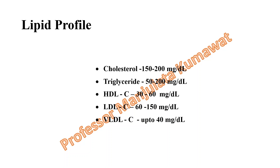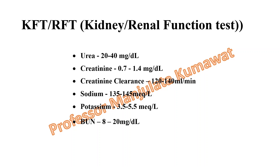The lipid profile is also a very important parameter. The normal level of cholesterol is 150 to 200 mg per dL. Triglycerides are 50 to 200 mg per dL. HDL cholesterol (high-density lipoprotein) is 30 to 60 mg per dL. LDL cholesterol is 60 to 150 mg per dL, and VLDL cholesterol is up to 40 mg per dL.